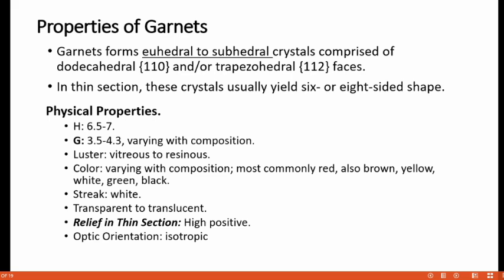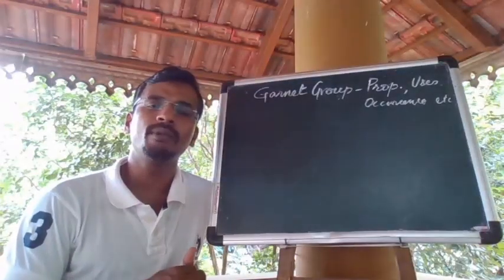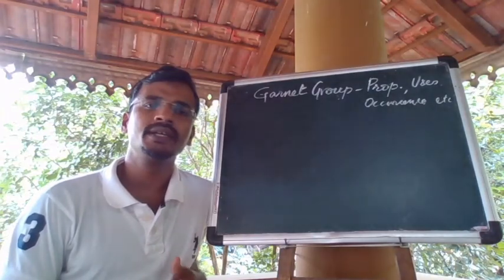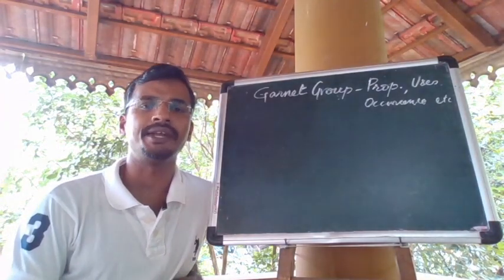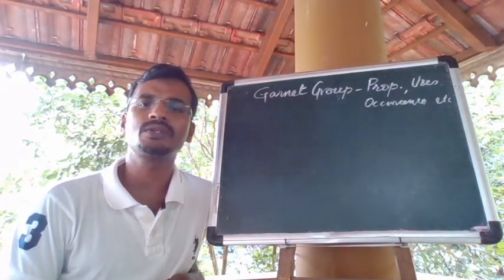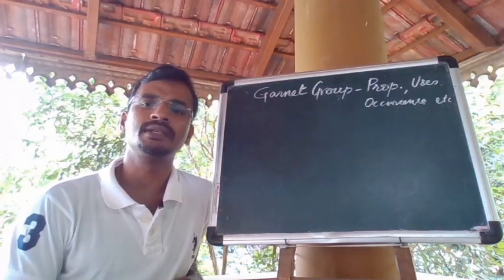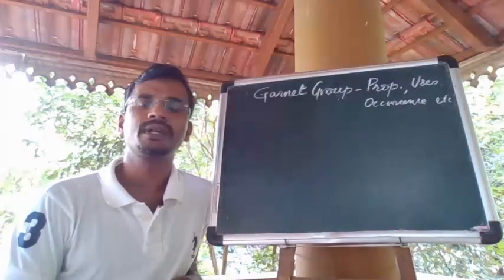If you look into the thin section, it shows high positive relief and its optical orientation is largely isotropic. The color of garnet is extremely variable, which is controlled by the amounts of iron, manganese and sometimes chromium present in the crystal structure.